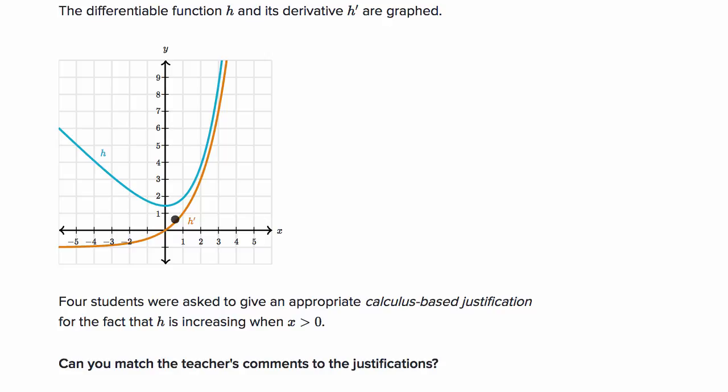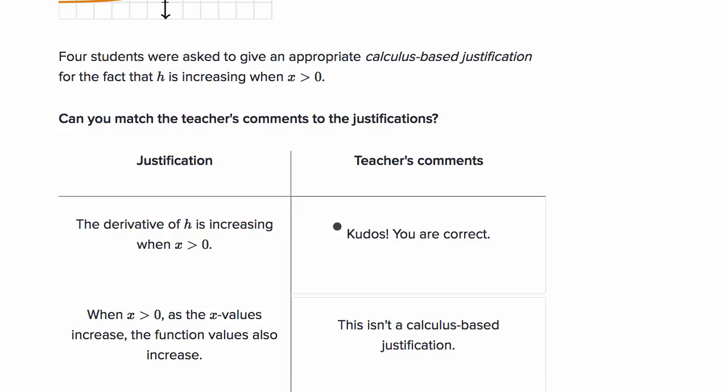If the derivative is positive, then that means the slope of the tangent line is positive, and that means the graph of the original function is going to be increasing. Let's see whether one of the students said that or what some of the other students wrote.